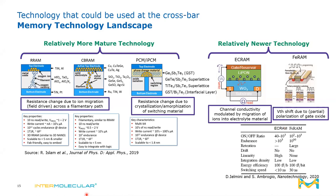Q: What is the working principle of ECRAM for write and read operations? For write: a gate voltage drives the electric field that moves lithium ions from the reservoir into the tungsten oxide channel. For read: you measure source-drain conductivity. The concentration of lithium ions at the interface changes the threshold voltage, which changes channel conductivity — and you measure that between source and drain.